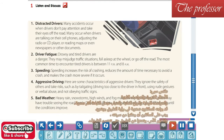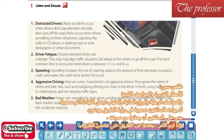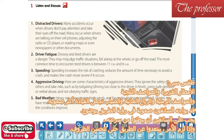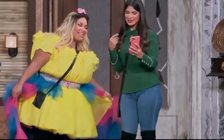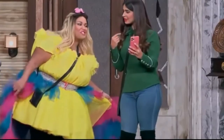5. Bad Weather. Heavy rain, snowstorms, high winds, and fog make driving more difficult. Drivers may have trouble seeing the road clearly. Drivers should slow down, and if necessary, pull off the road until the conditions improve.